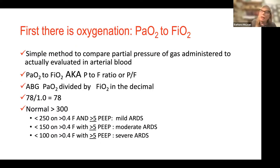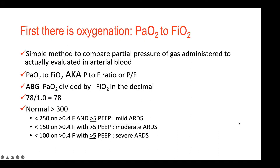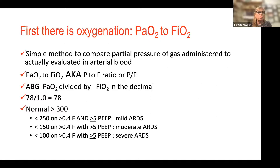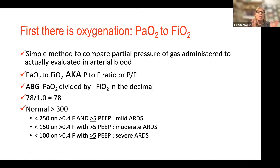Oxygenation evaluation is the simplest — easiest thing we evaluate, though not the easiest thing to treat. Never is it adequate to talk about PaO2 or SaO2 alone. We always need to look at the comparative relationship of gas given to gas received in the arterial blood. Gas given is the FiO2; gas received in arterial blood is PaO2. That's called the P:F ratio — PaO2 to FiO2 — the patient's PaO2 on the blood gas divided by the FiO2 being delivered at that time.